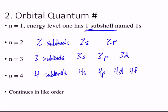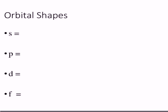The patterns continue. If we go to five, it would add another one — after F it would be G, then H. But we won't go that far because we actually run out of elements. All this stuff about sub-levels and their shapes is based on theoretical equations. Now, orbital shapes are something you have to know.